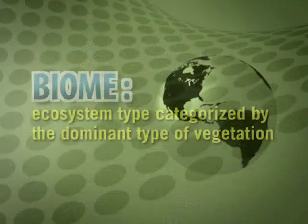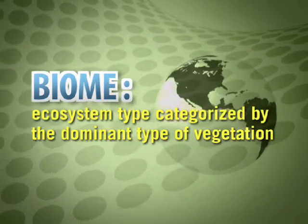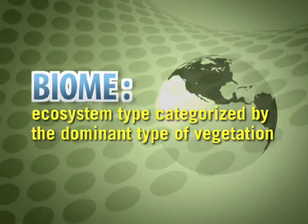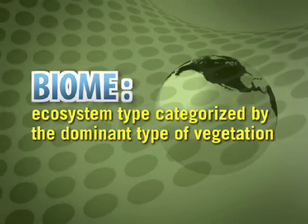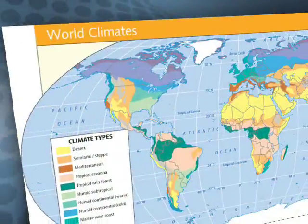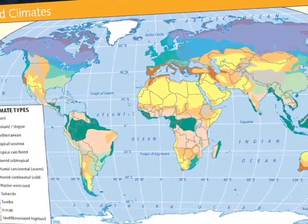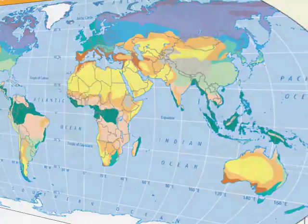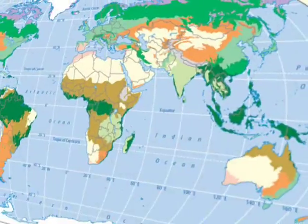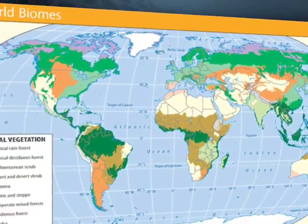The ecosystem type categorized by the dominant type of natural vegetation is called a biome. As a result of the fact that climate determines the type of vegetation, the biomes correlate directly to climate.